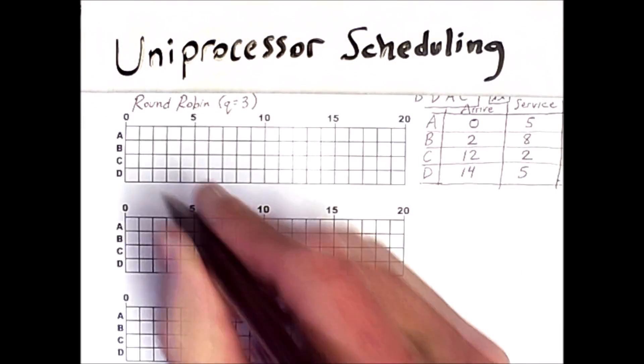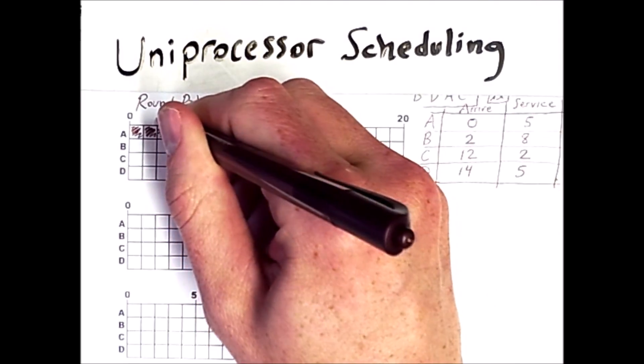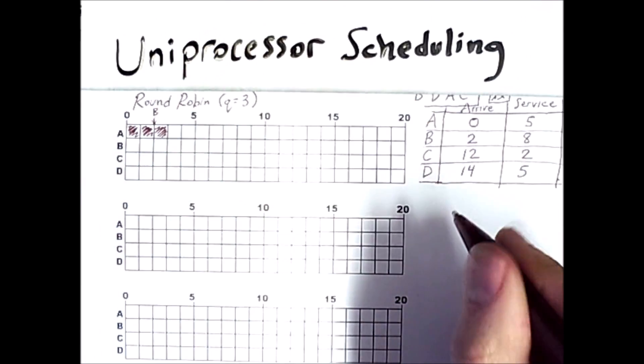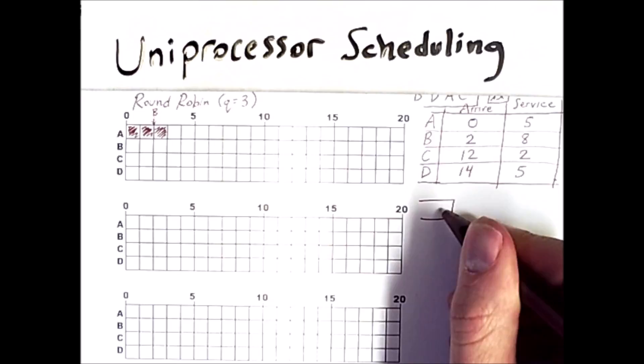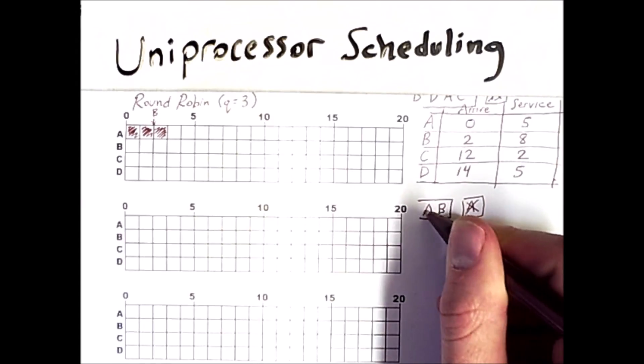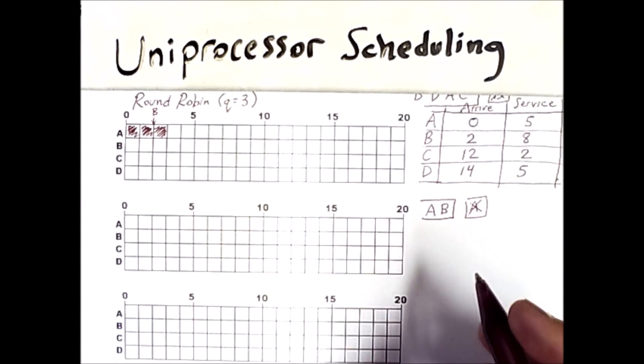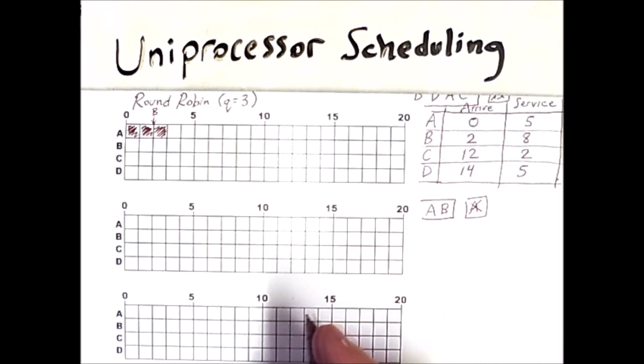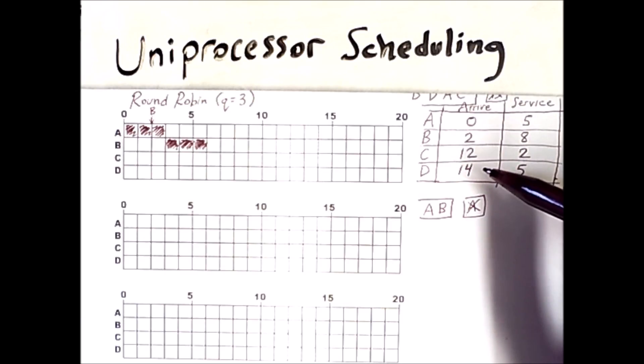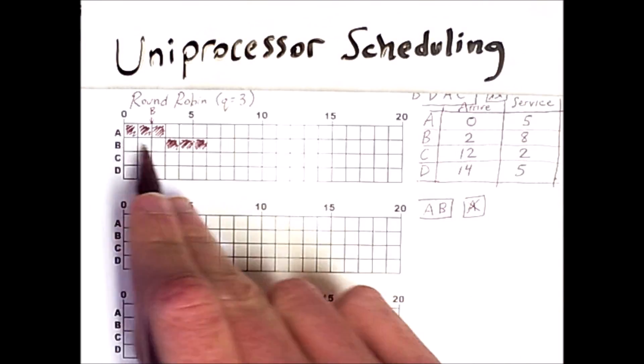Now process B arrived at time two. So it is already waiting in the queue by the time that A finishes. So we have the queue here. B is in line. A is on the processor. But then it finishes and gets in line behind B. So at this point, B will get to run for three units. And at this point, no new processes have arrived yet. Because notice that the arrival times for C and D are quite late in this example. So it's only A and B. So B has finished a quantum of three units. And it is A's turn again.